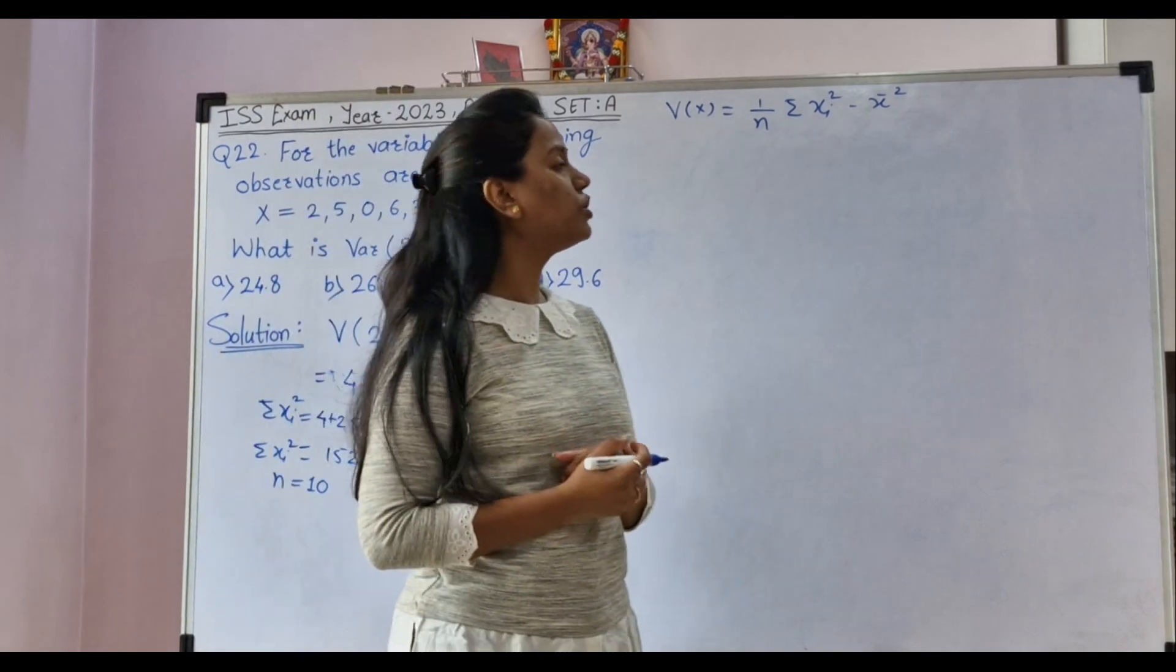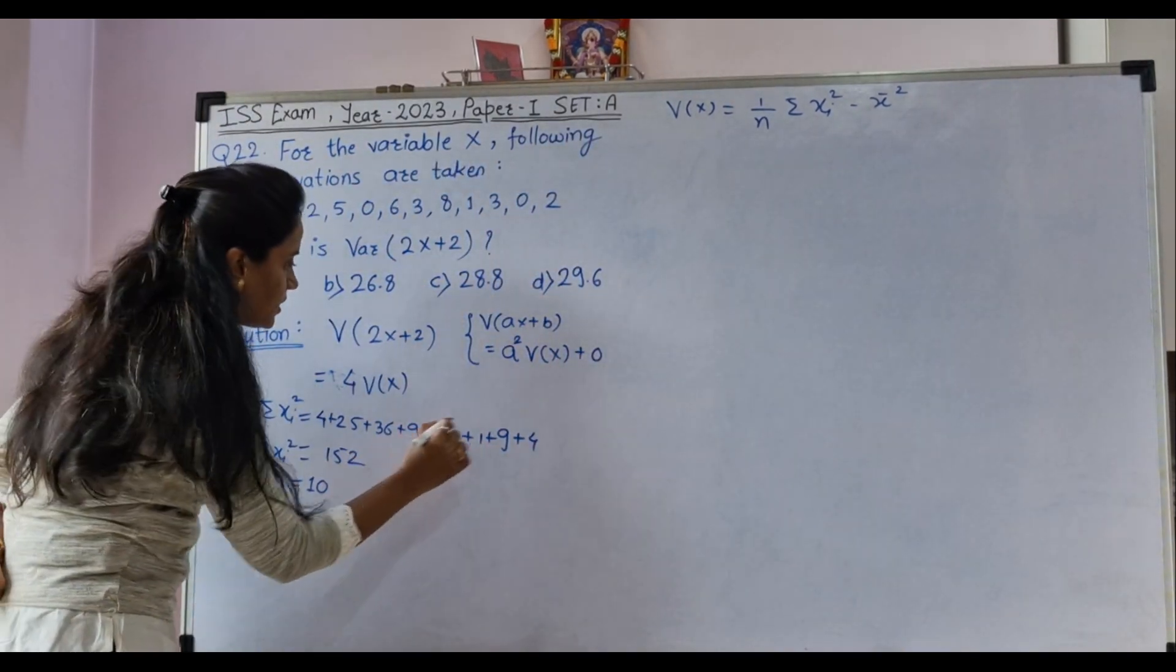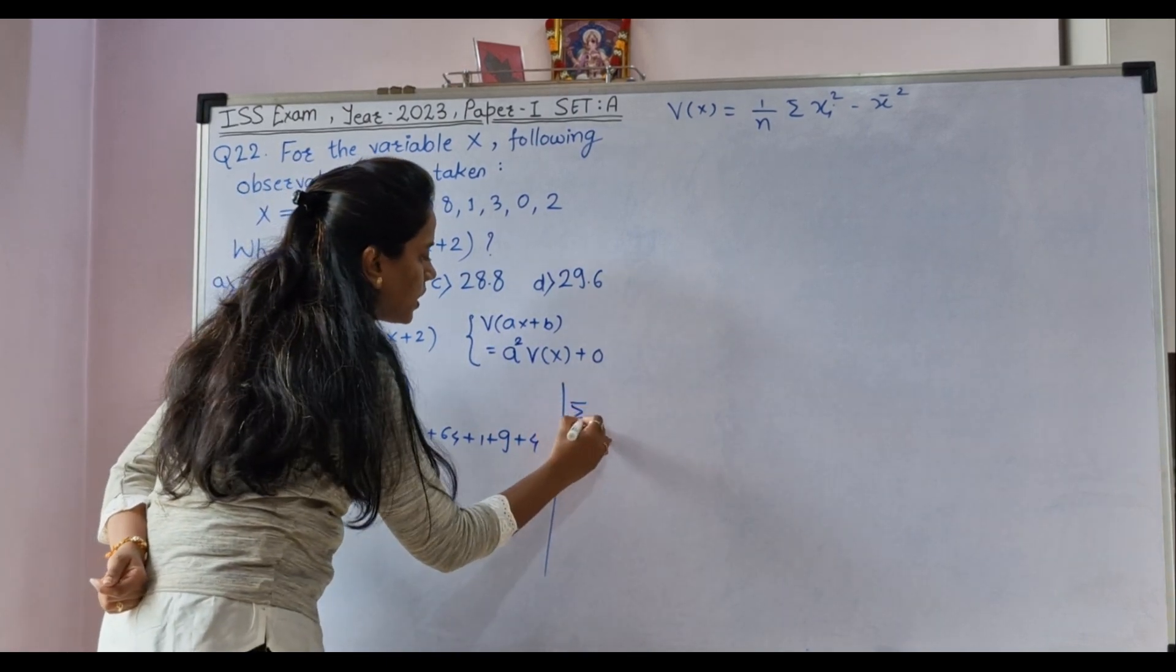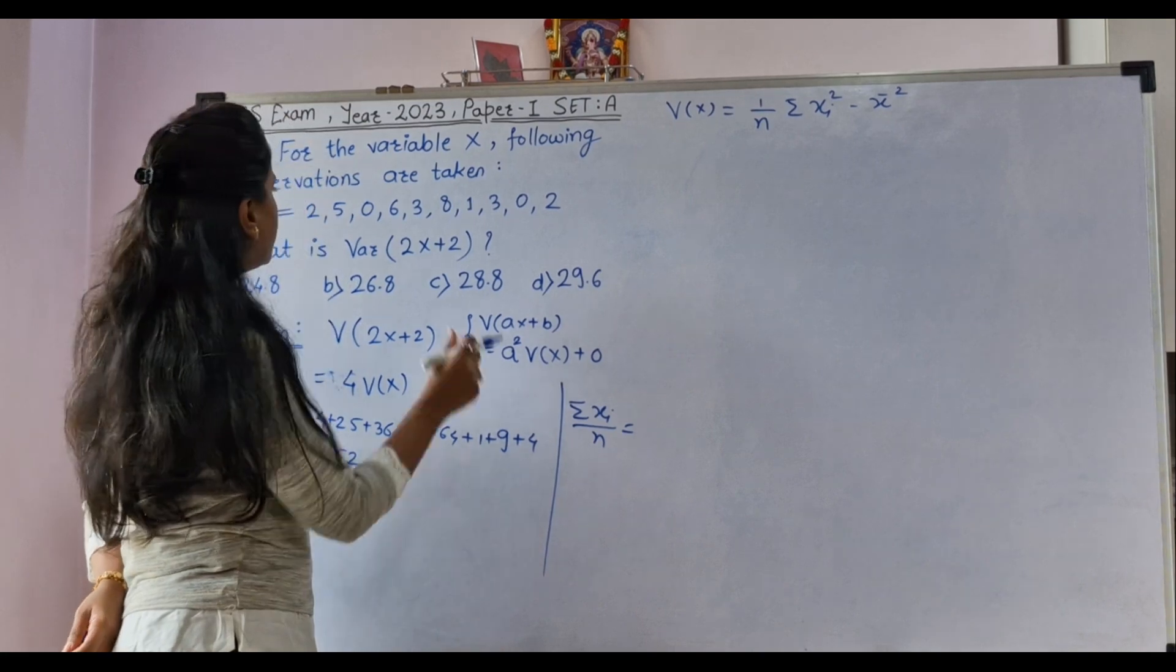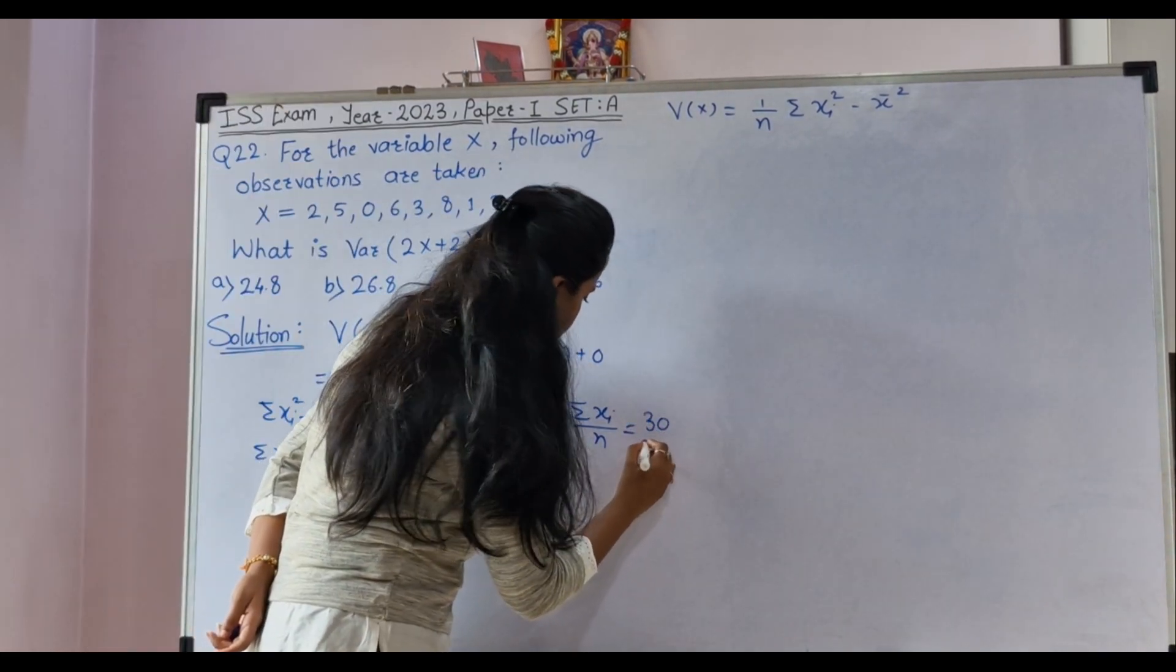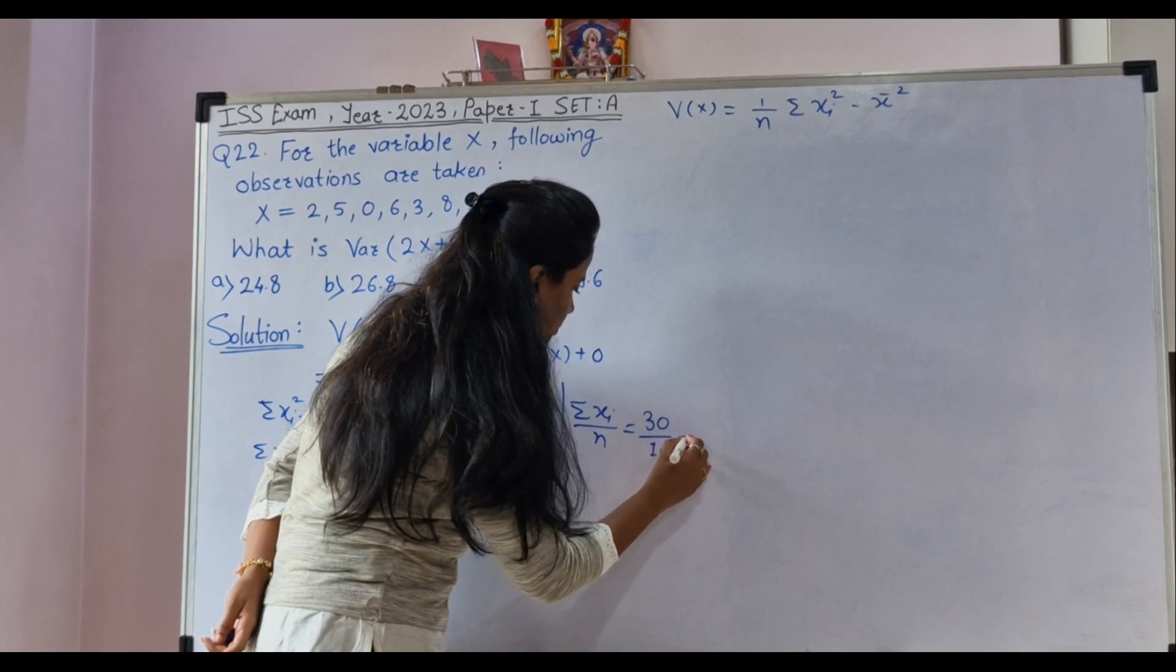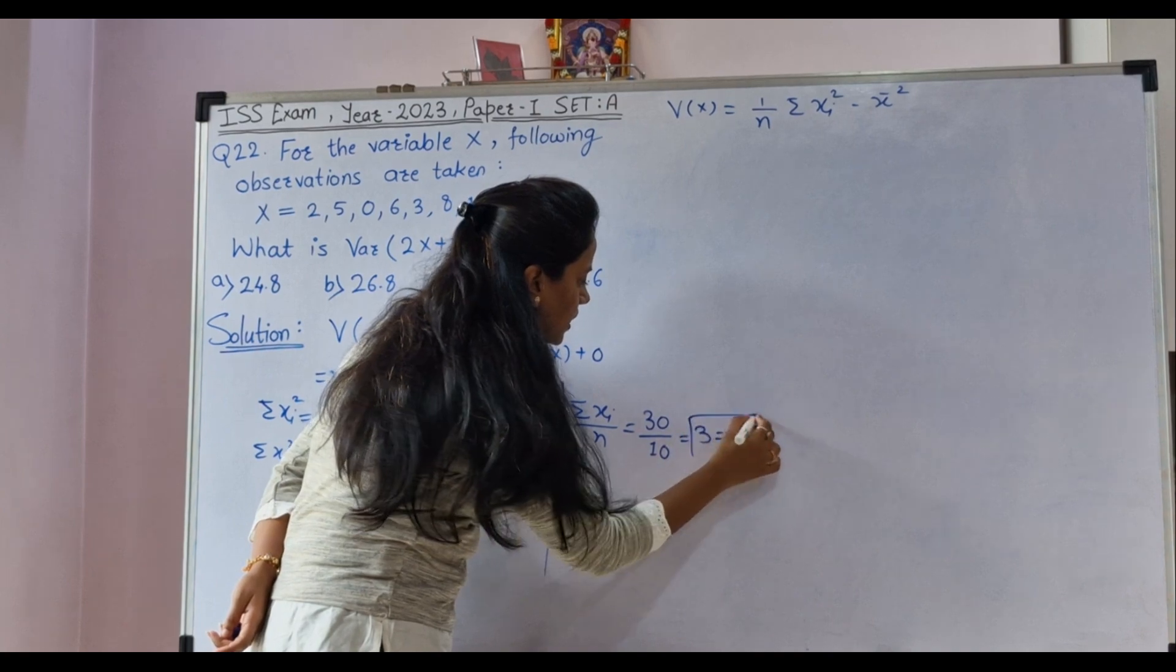Next, what we want to calculate? Mean we want to calculate. So, it is summation Xi upon N. Here sum is 30 and total number of observations are 10. So, our mean is 3.